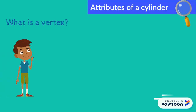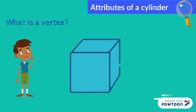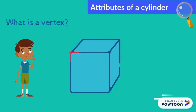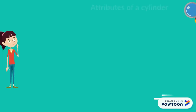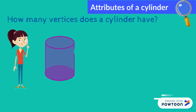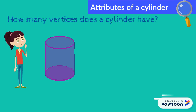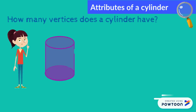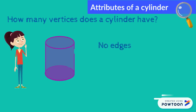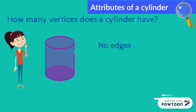Let us review what is a vertex. A vertex is created when two or more edges meet. If we need at least two edges to make a vertex, and since a cylinder doesn't have any edges, does that mean a cylinder has no vertices? If your answer is yes, it does — then you are correct. A cylinder has no vertices.